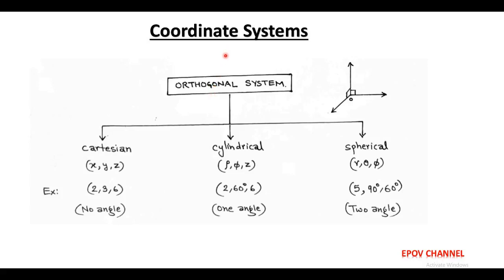Welcome friends. Our next topic is coordinate systems. Basically, coordinate systems are orthogonal systems in which all three axes are mutually perpendicular to each other. Orthogonal systems are of three types: Cartesian coordinate system, cylindrical coordinate system, and spherical coordinate system.